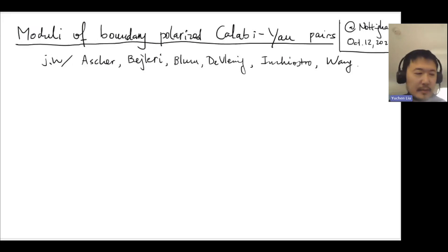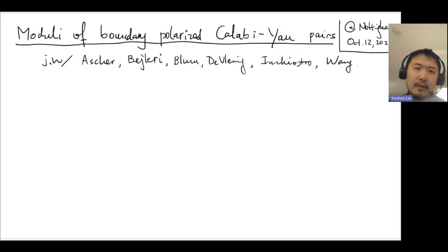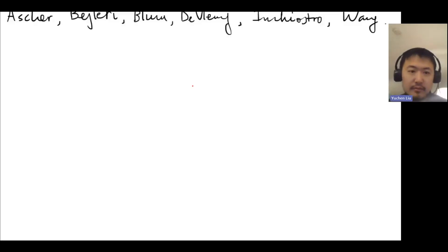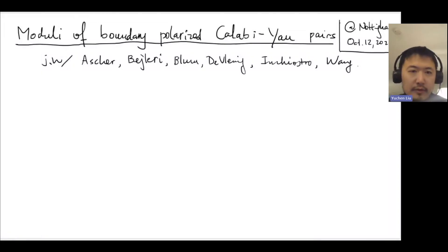It's a great pleasure to speak at the Nottingham Algebra Geometry Seminar. I want to talk about some recent work joined with six authors: Kenny Ascher, Dori Bejleri, Harold Blum, Kristin DeVleming, Giovanni Inchiostro, and Xiaowei Wang. We initiate a study of a certain kind of Calabi-Yau pair which we call boundary polarized Calabi-Yau pairs. I'll first start with the background and then try to explain why we care about this and what we proved. So first, let's look at the motivation.